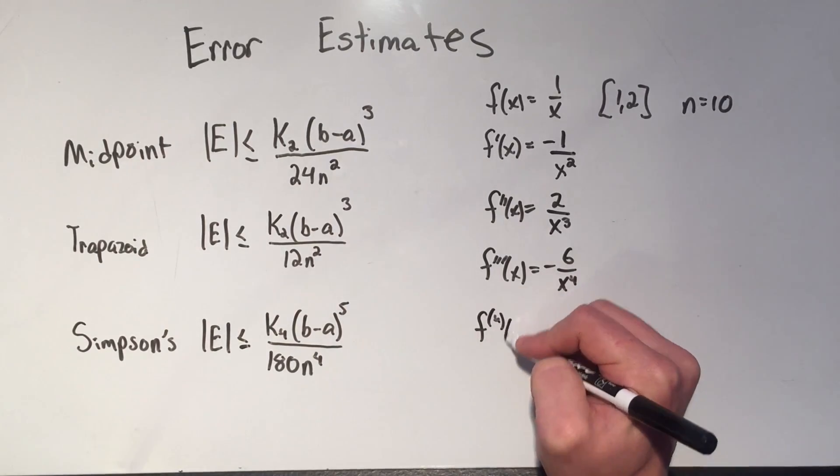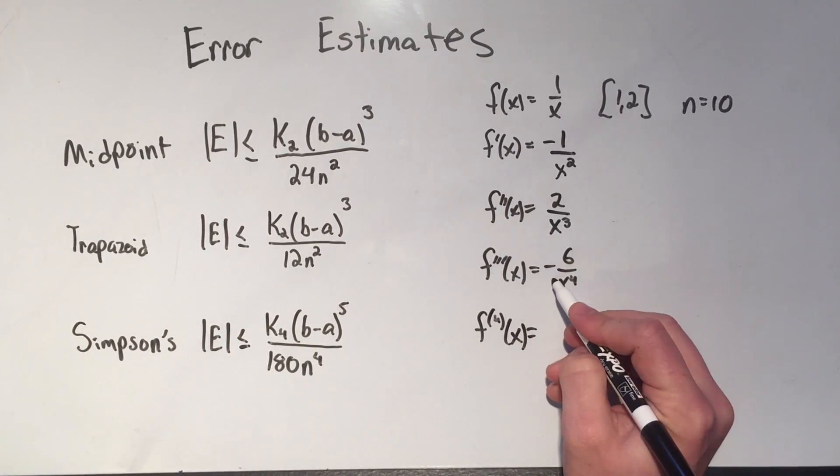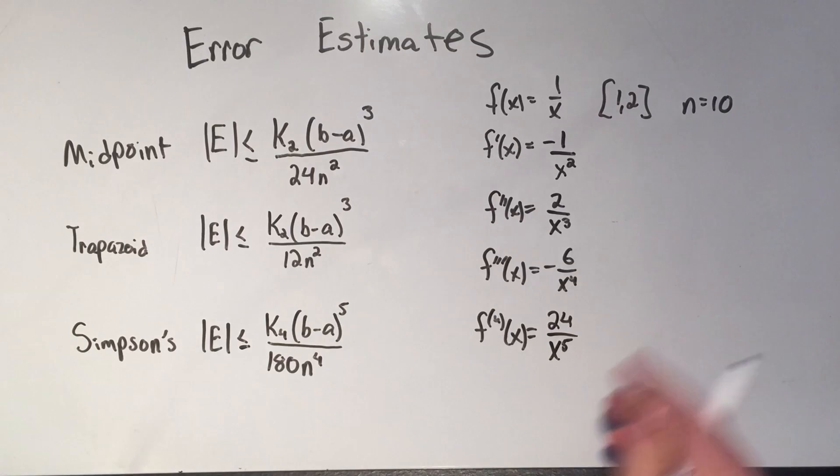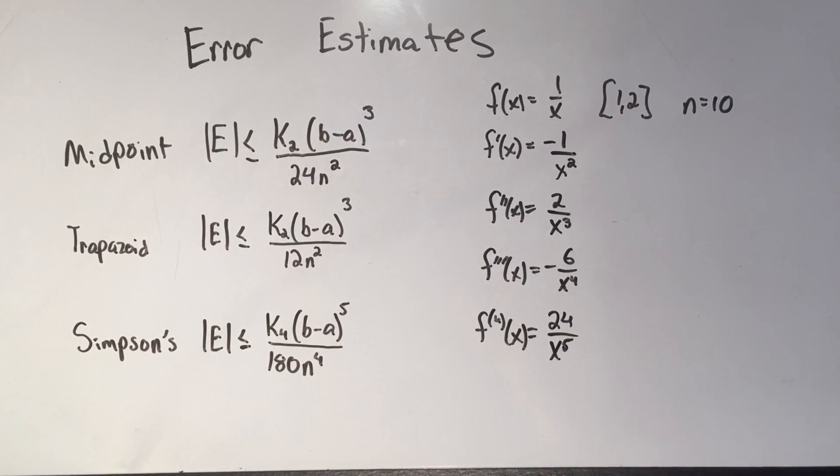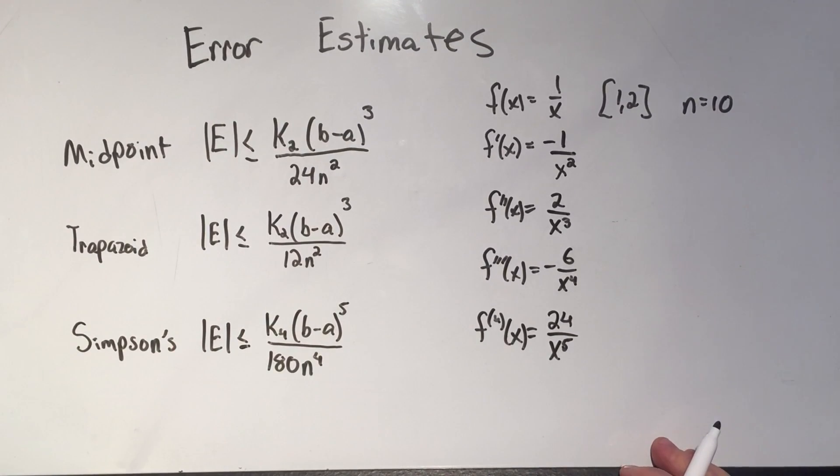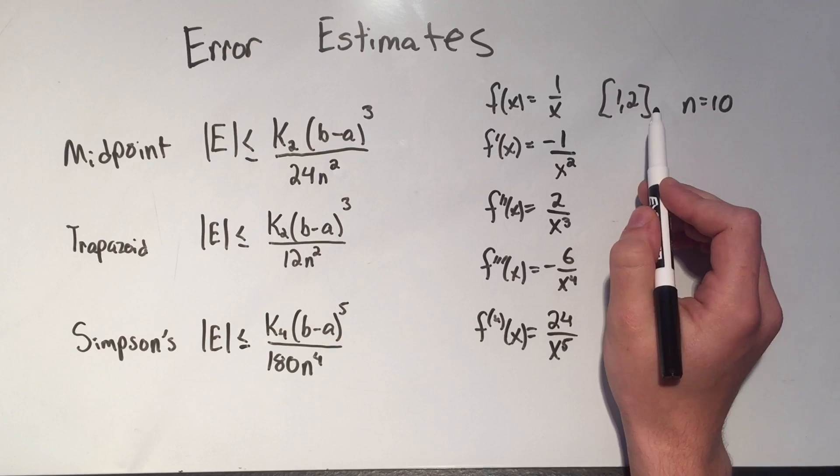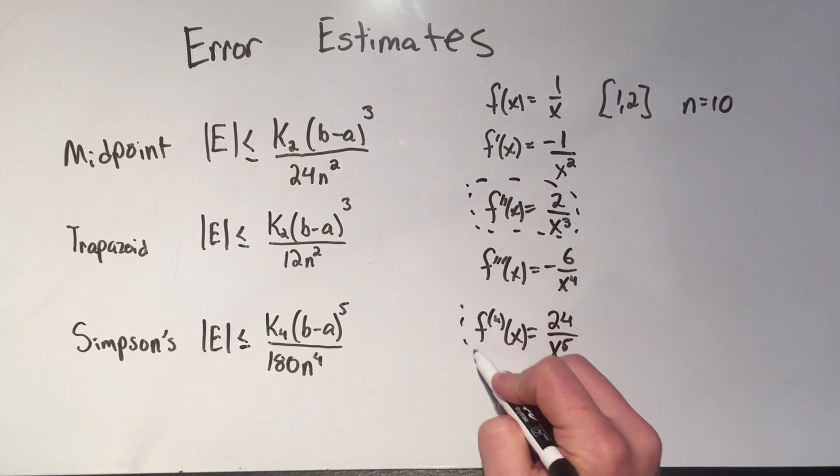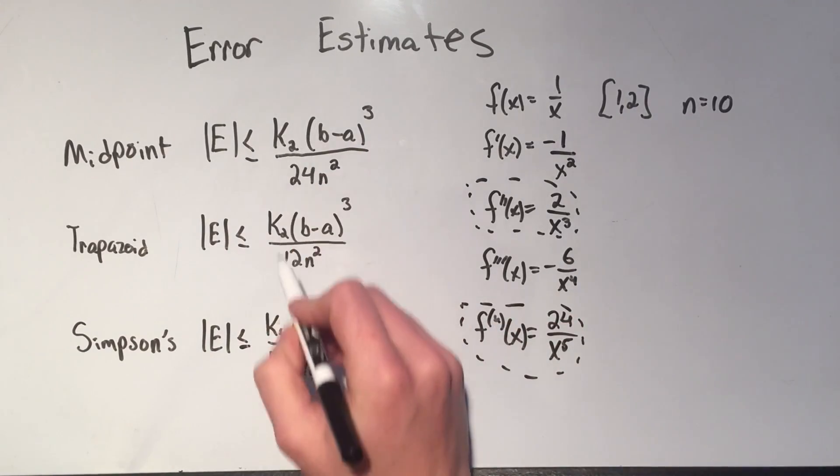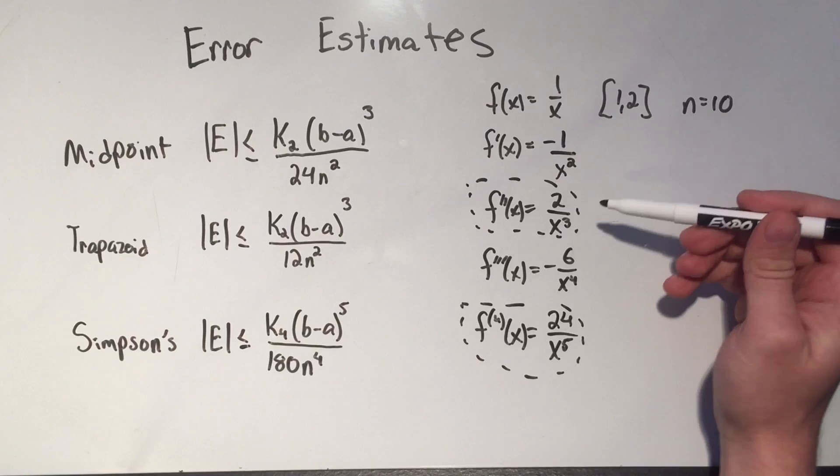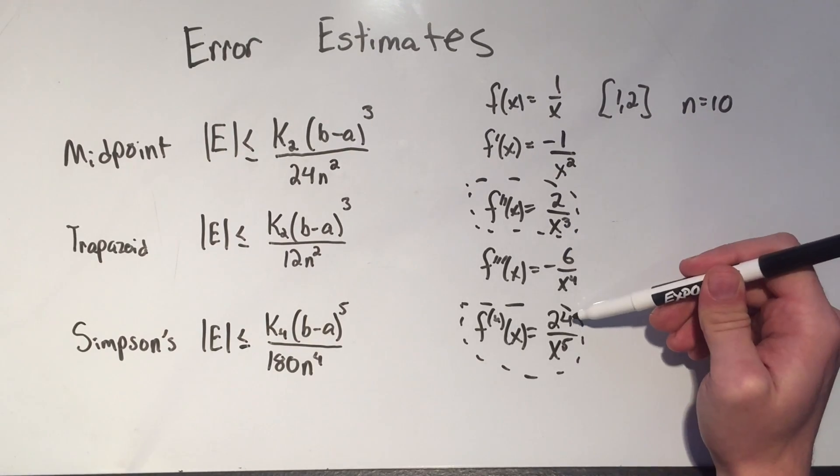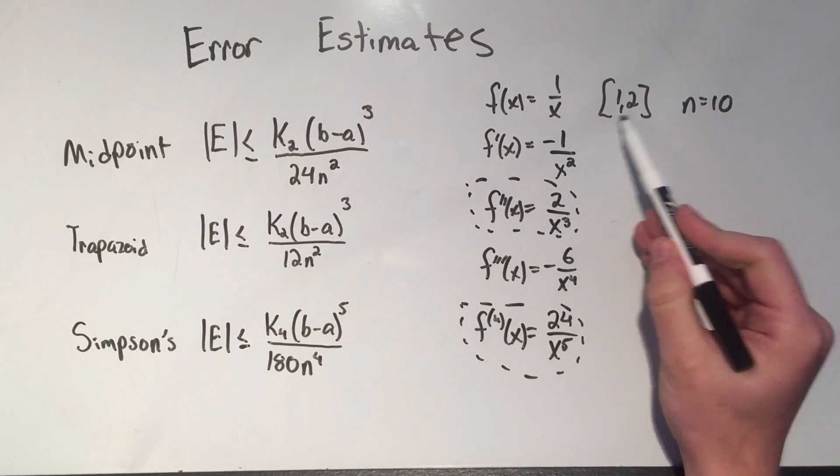I need four derivatives, so I'll do one more, I flip the sign to make that positive, I do six times four is 24, and then I add one to the power in the denominator. Okay, now, what is the maximum value of all these things on one to two? And I really only care about my second derivative and my fourth derivative, right, because that's why I've got k₂ and k₄. So I basically want to know, what's the maximum value of 2 over x³ and 24 over x to the fifth on the interval one to two?